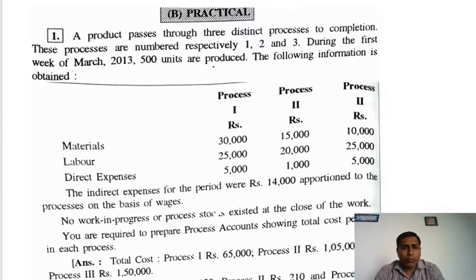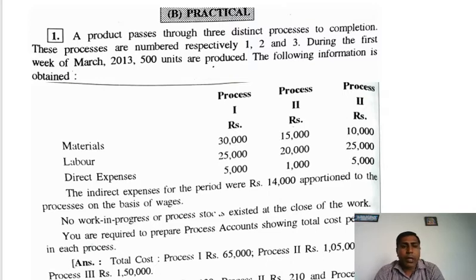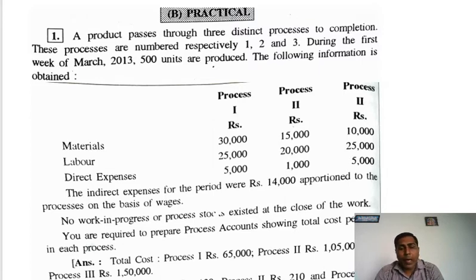In our previous lectures we discussed in detail the theory about process costing, and then how to prepare the process costing account — Process Account 1, Process Account 2, Process Account 3 — and we also prepared the normal wastage account, abnormal wastage account, and abnormal gain.